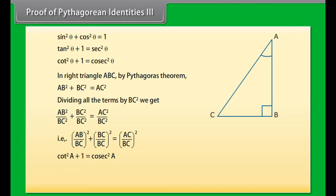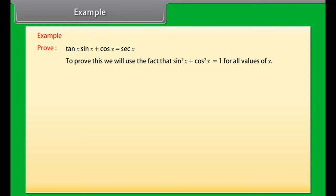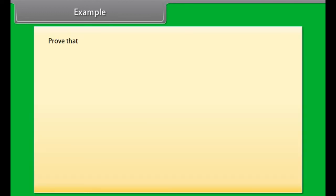Proof of Pythagorean identity 3: The last identity is cot²θ plus 1 equals csc²θ. Taking right triangle ABC, by the Pythagorean theorem AB² plus BC² equals AC². Dividing all terms by BC² we get (AB/BC)² plus (BC/BC)² equals (AC/BC)², that is cot²A plus 1 equals csc²A. Since csc A and cot A are not defined for A = 0°, this is true for all A such that 0° < A ≤ 90°.